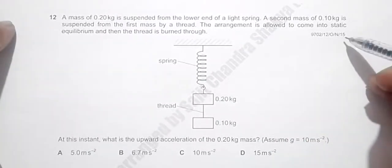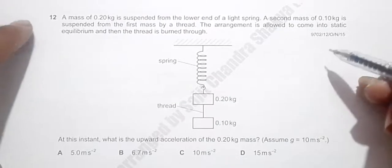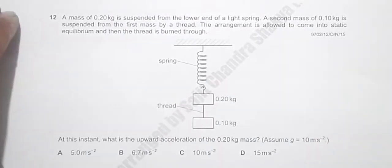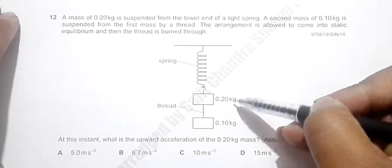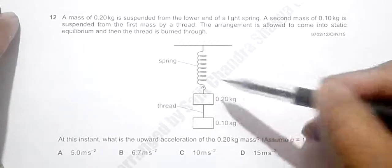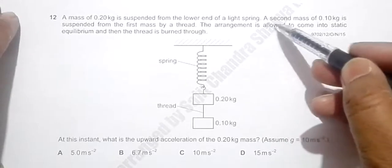This is question 12 from the 2015 October November paper 1-2. It shows a mass of 0.2 kg is suspended from the lower end of a light spring, then a second mass of 0.10 kg is suspended from the first mass by a thread.